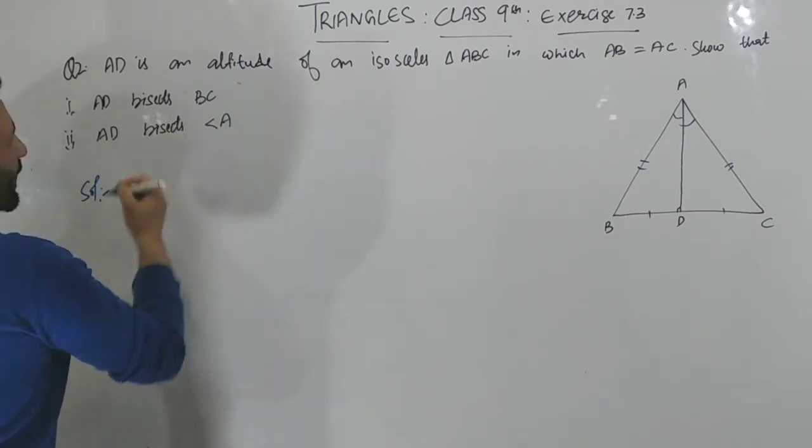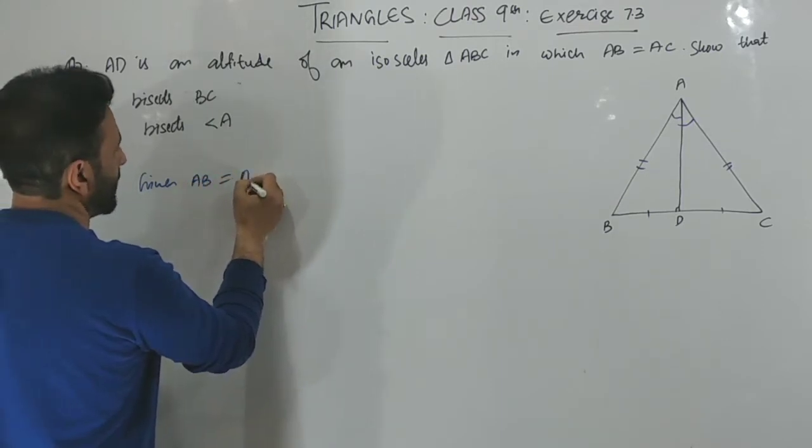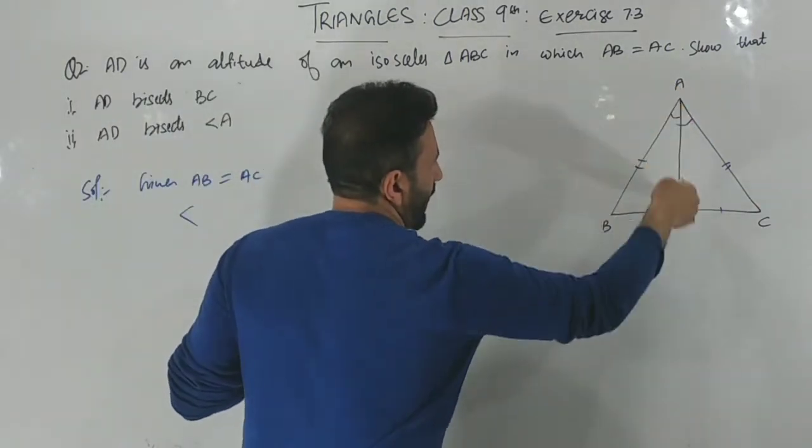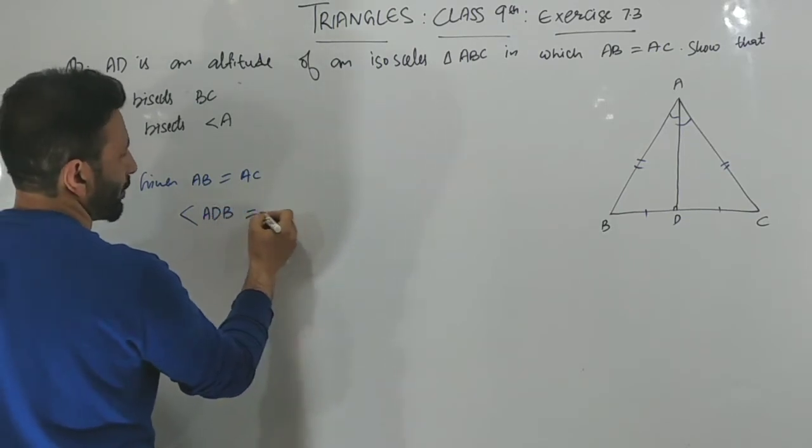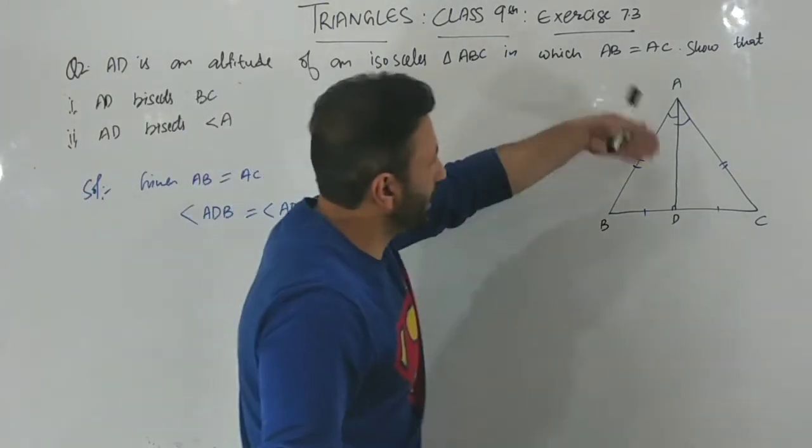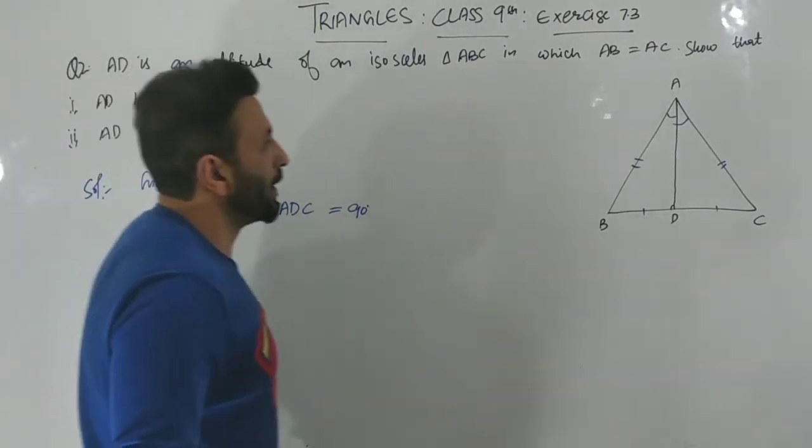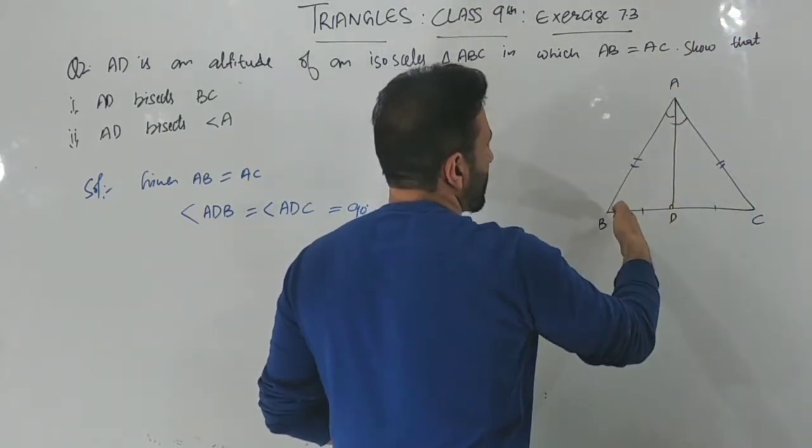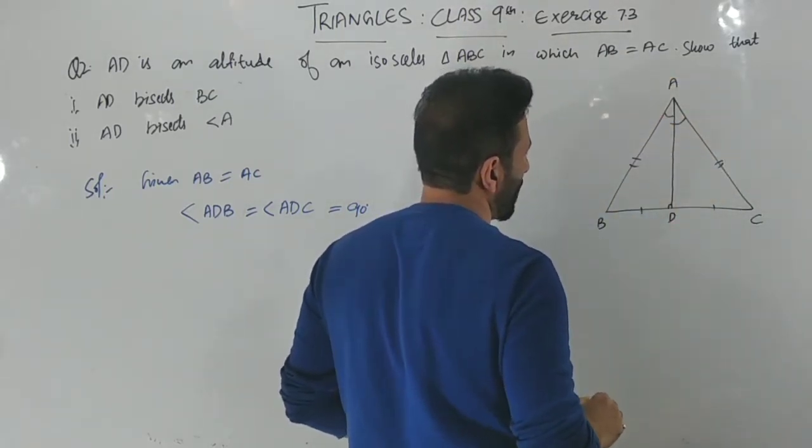Let's solve this. What is given? Given is AB equals AC, and angle ADB is equal to 90 degrees because AD is altitude on BC. So let's look at these two triangles: triangle ADB and triangle ADC.